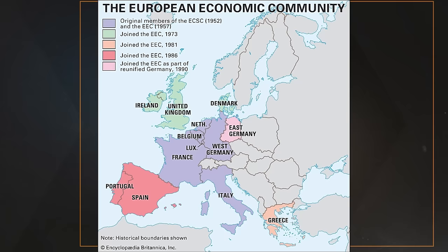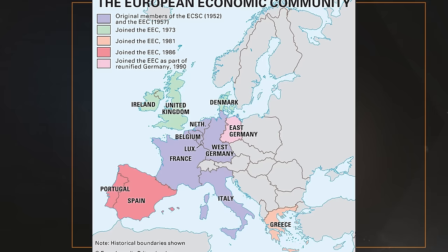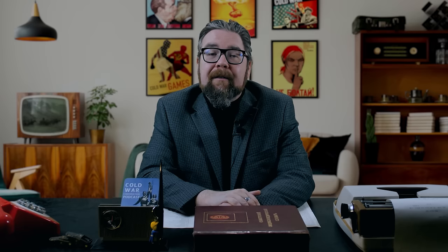1951 also witnessed the signing of the Treaty of Paris, establishing the European Coal and Steel Community. The six signatories — France, Germany, Belgium, Italy, Luxembourg, and the Netherlands — agreed to create a common market for coal and steel, looking to rationalize the distribution and production of these goods while increasing employment and living standards at the same time. Given that several of these countries had been engaged in a bitter and devastating war only six years before, the Treaty of Paris has been hailed as an enormous step in diplomatic reconciliation. The ECSC is often regarded as the key institution that would eventually lead to the formation of the European Community and subsequently the European Union.